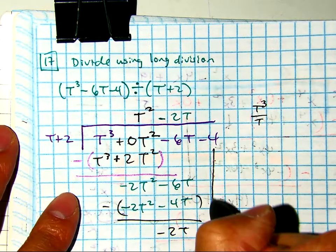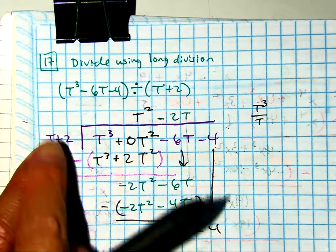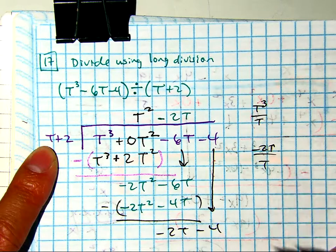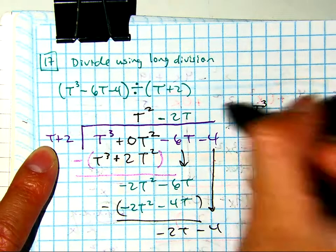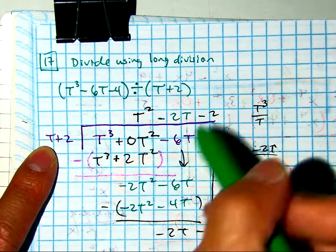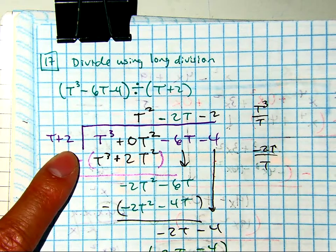Negative six plus four. I get negative four. T goes into negative T. T, so that equals two times minus two, and then you distribute, and when you subtract, you'll get zero.